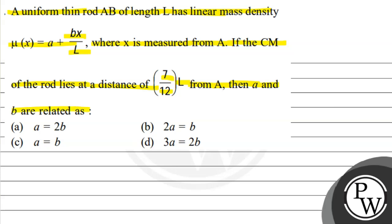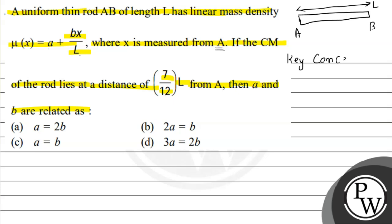So basically, here is a thin rod AB of complete length L, with linear mass density A + Bx/L. The center of mass formula we will use here is: x_cm equals integration of μ times distance divided by integration of μ. We will use this concept for the solution.